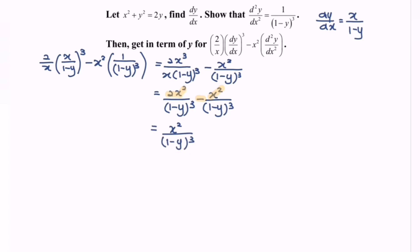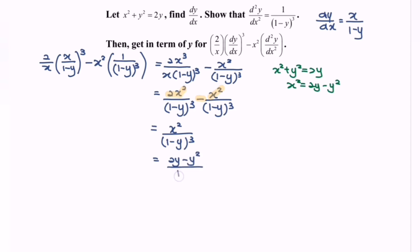The question asks us to express the situation in terms of y. From the original equation x squared plus y squared equals 2y, we get x squared equals 2y minus y squared. Substituting: we have (2y minus y squared) over (1 minus y) to the power of 3. Since the answer should be in terms of y, not y squared, we factor out y to get y(2 minus y) over (1 minus y) to the power of 3.